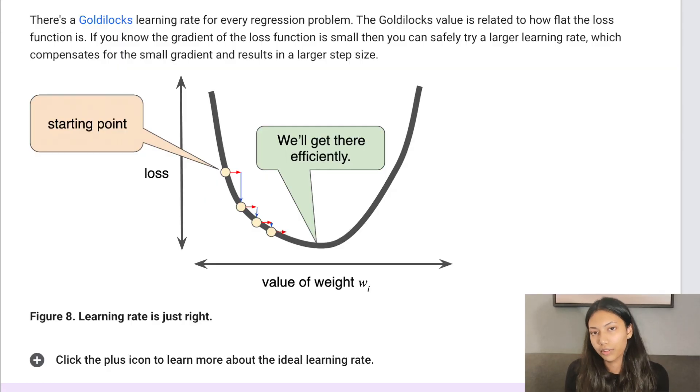So how do you find the most optimum value for the learning rate? Well, there is something called the Goldilocks principle. If your gradient is actually very small, which means that your line is actually pretty flat, almost horizontal, then you would actually use a much higher learning rate. However, if your gradient is really high and it's really steep, then it's better to use a smaller learning rate.